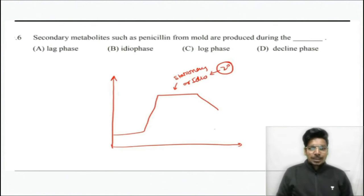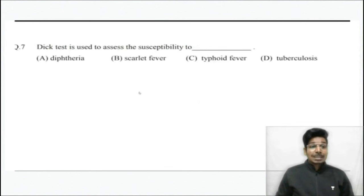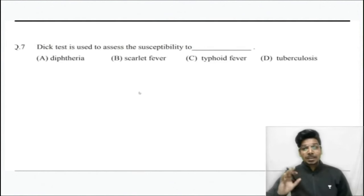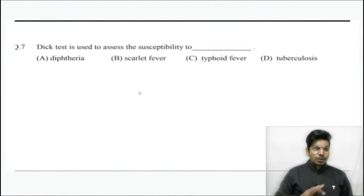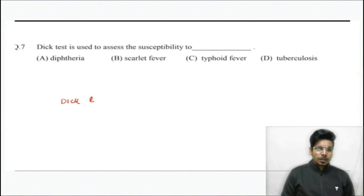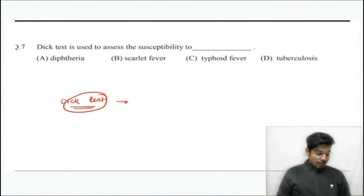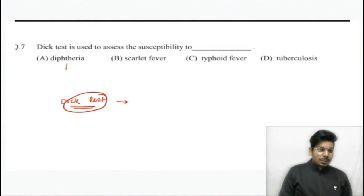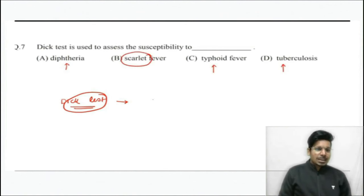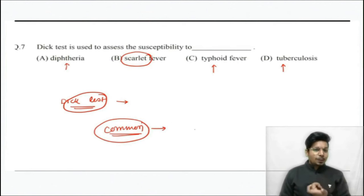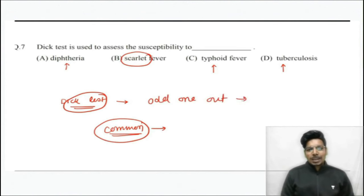Question number seven: The Dick test is used to assess susceptibility to which disease? This is an odd-one-out question. The Dick test is not used for diphtheria, typhoid, or tuberculosis. Using common sense, the odd one out is scarlet fever — the Dick test is used for scarlet fever.